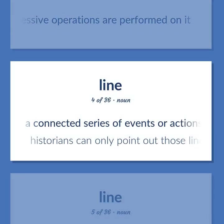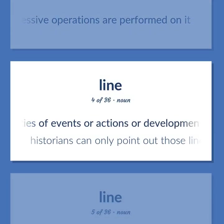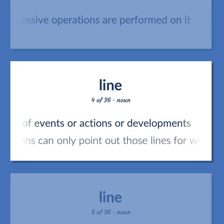Line: a connected series of events or actions or developments. Example: historians can only point out those lines for which evidence is available.